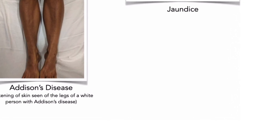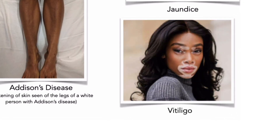In vitiligo, individuals lose their melanocytes, causing white patches on otherwise normal skin. The condition develops in about one percent of the population, and its incidence increases among individuals with thyroid gland disorders, Addison's disease, or several other disorders. It is suspected that vitiligo develops when the immune defenses malfunction and antibodies attack normal melanocytes. The primary problem with vitiligo is cosmetic, especially for individuals with darker pigmented skin.